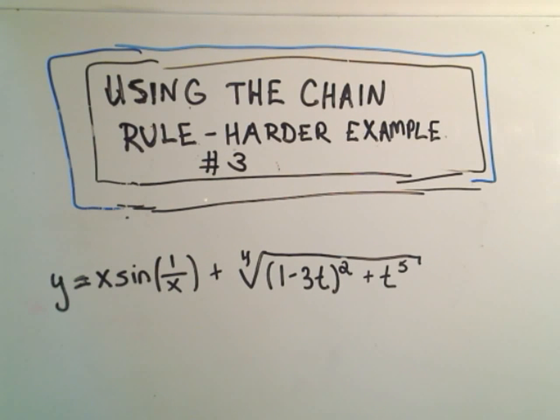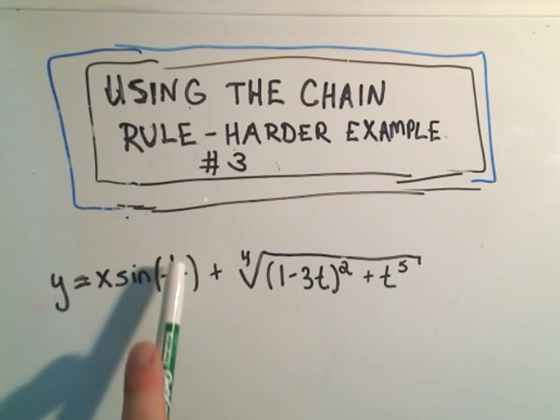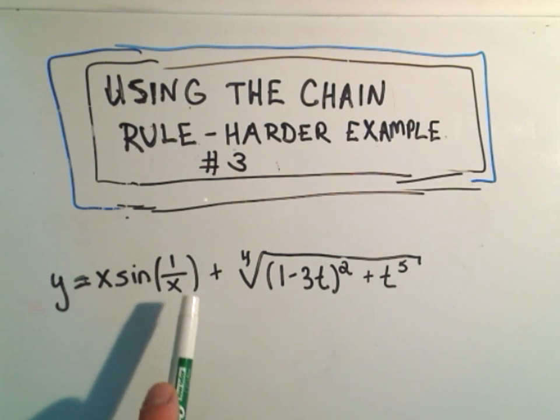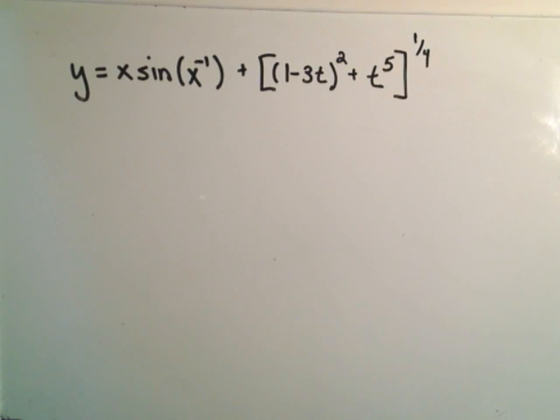The first thing, again, I always do is I just kind of look at the bits individually. I would like the x to be upstairs so I can use the power rule. Likewise, I would like this to be raised to the fourth root, to the fourth power, that is, so that I can also use the power rule on that.